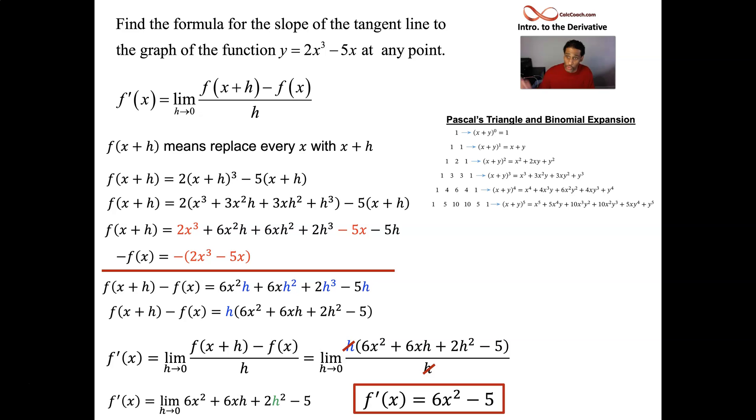This is a function that you can plug a number into and it won't spit out the y value. It'll spit out the derivative value. It'll spit out the slope of the tangent line. We did it for negative one. And what we got out of that was a one. Negative one squared is one times six is six. Take away five is positive one. But now we can do it for anybody.